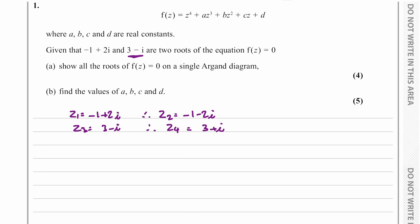We can show these on an Argand diagram with our imaginary and real axis. For z1, this will have a real part of negative one and an imaginary part of positive two, so we'll plot this at coordinates negative one and two. z2 will be a reflection of z1 in the x-axis, and z3 will have a real part of three and an imaginary part of negative one. z4 will be a reflection of this root in the real axis.